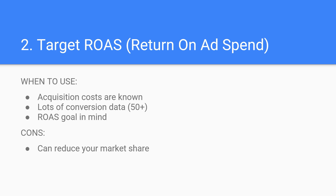Here's what the target ROAS strategy looks like when you're creating a new campaign. If you're still not sure what to set as your percentage, you can navigate to a previous campaign on Google Ads and modify your columns. If you add the metric called 'conversion value divided by cost' or 'all conversion value divided by cost' and use that number from your top performing campaigns, you can then set that number as your target ROAS.